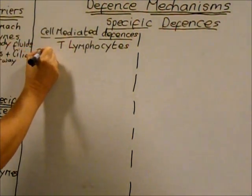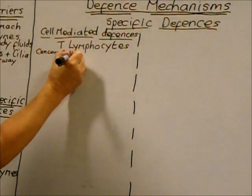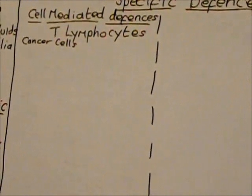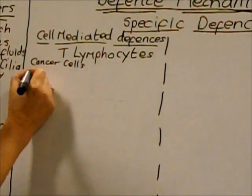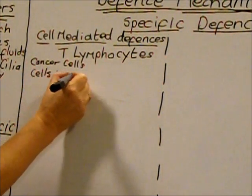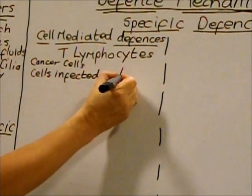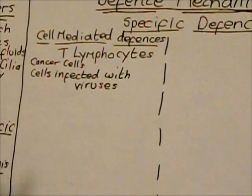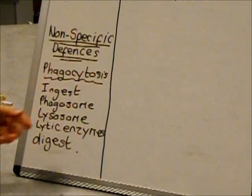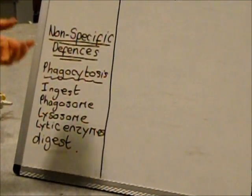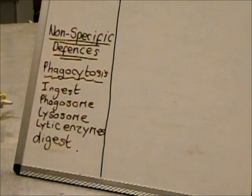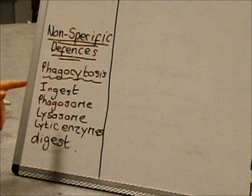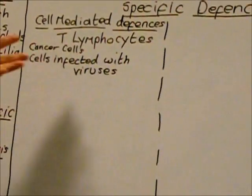This can happen in three ways. First, cancer cells often carry unusual proteins and glycoproteins in their cell surface membranes. Second, cells infected with viruses often have viral proteins in their cell surface membranes. Third, a phagocyte which has just engulfed a pathogen — as the pathogen is being digested, the antigens from that pathogen are taken by the phagocyte and inserted into the phagocyte's cell surface membrane.